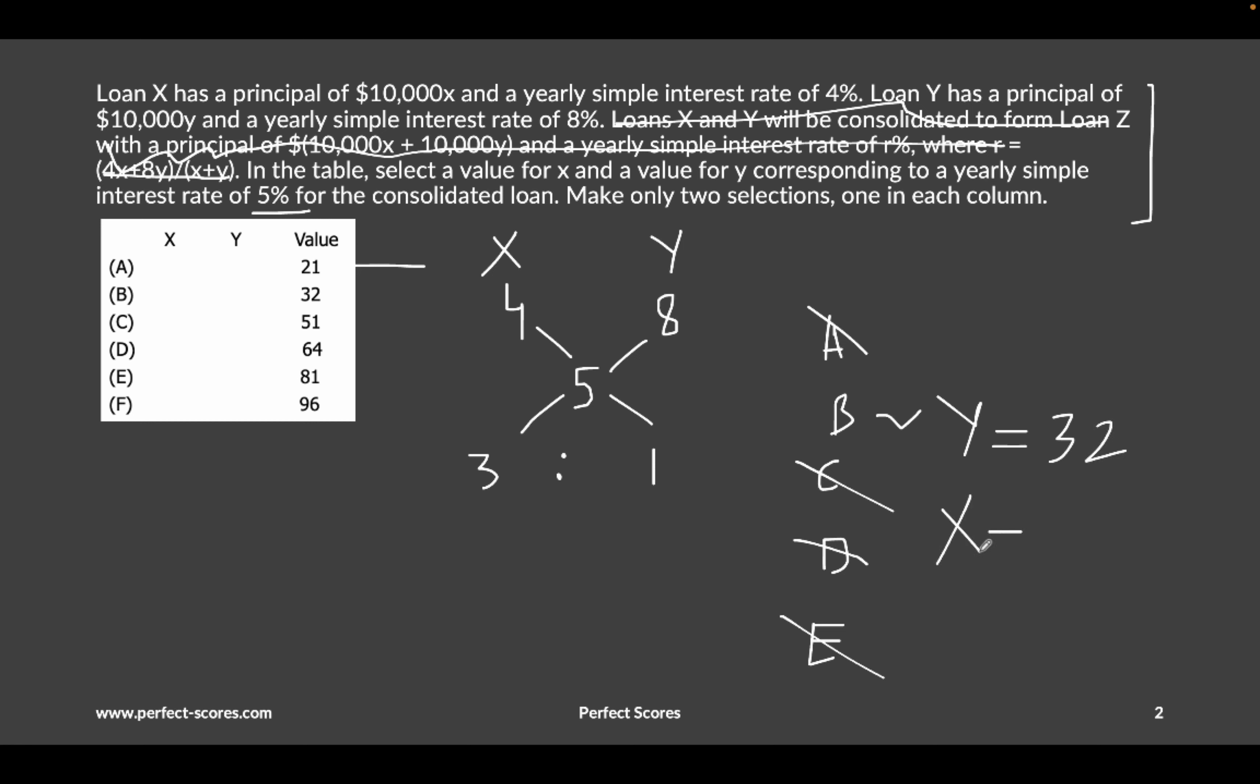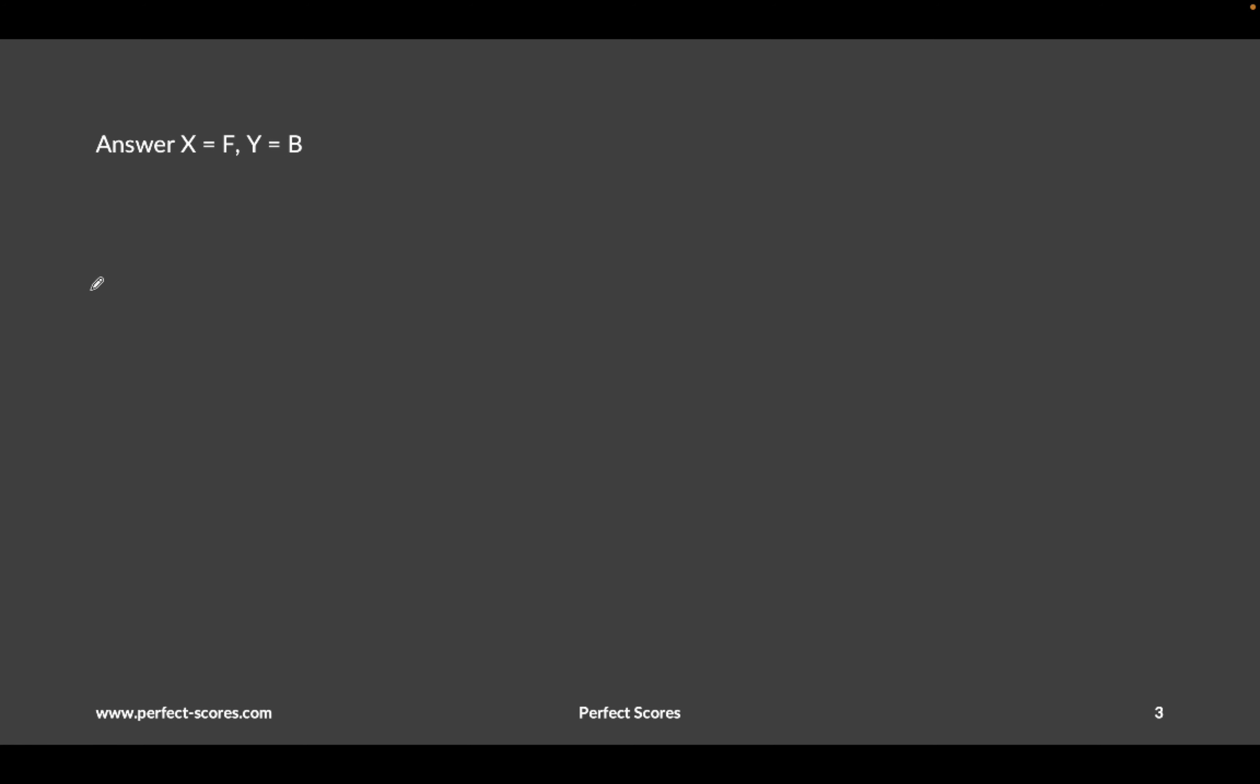which means that Y here is actually 32 and X is 96. Our answer to this two-part question is not going to be 32 and 96. Our answer is going to be that X is F and Y is B. This is going to be our answer.